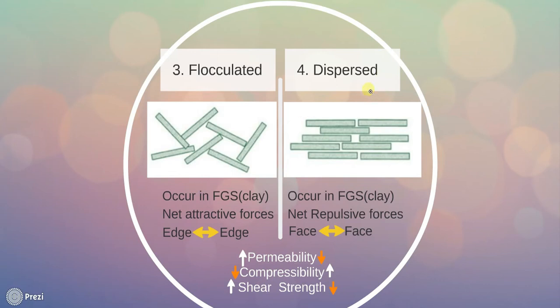Dispersed structure develops in clays that have been remolded. The particles develop more or less parallel orientation. Clay deposits with flocculated structure when transported to other places by nature or man get remolded. Remolding converts the edge to face orientation to face to face orientation. The dispersed structure is formed when there is net repulsive forces between the soil particles. Soils with dispersed structure generally have low shear strength as well as low permeability but high compressibility.